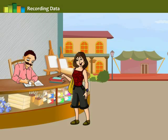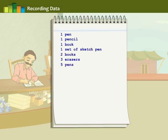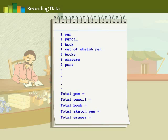Now let us see how a shopkeeper maintains a record of items sold in a particular day. He starts writing in a diary as each customer comes and each item is sold — for example, one pen, one pencil, one book, one set of sketch pens, two books, three erasers, five pens and so on. At the end of the day he has to count all the items he sold, which consumes a lot of time and he gets tired.